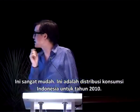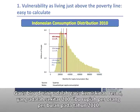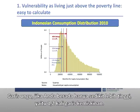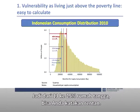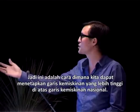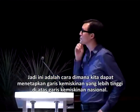Here's the Indonesian consumption distribution for 2010. The blue line is the official poverty line — around 200,000 rupiah per person per month in 2010 — which captures about 13% of the Indonesian population. The purple line at 1.2 times the poverty line captures around 25% of the population, meaning about 12% are in the vulnerable category. The red line at 1.5 times the poverty line captures about 40% of the Indonesian population.